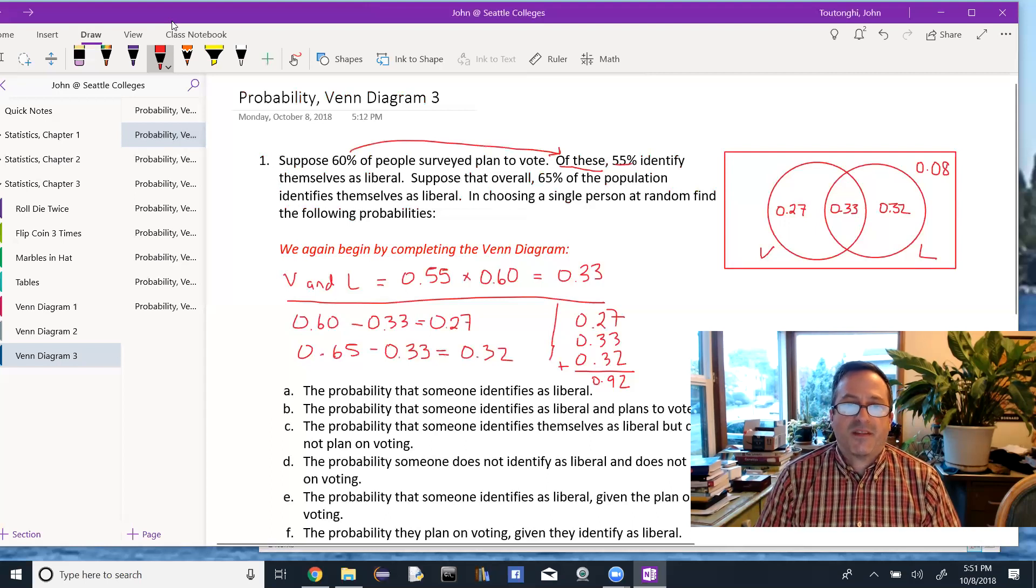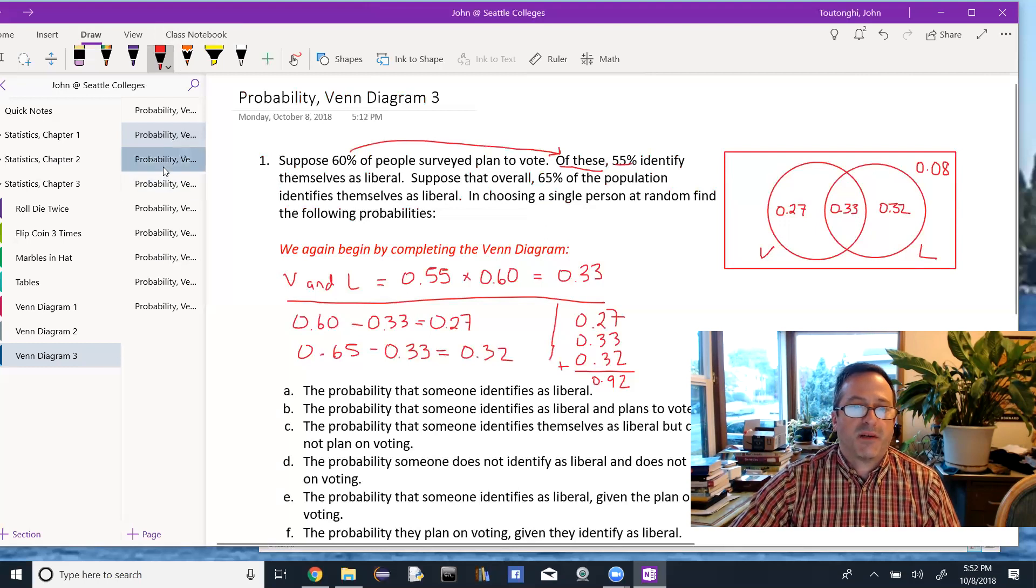That's setting up the Venn diagram, and that is the work here in this problem. And then the rest of the work is sort of knowing which pieces identify what probabilities. So we're going to move on to each of these parts.